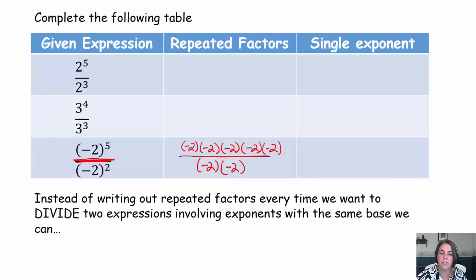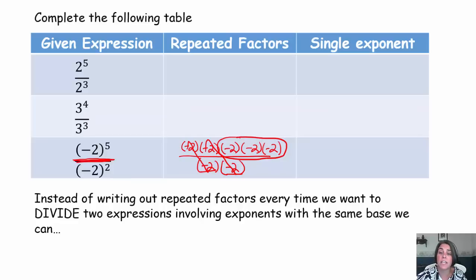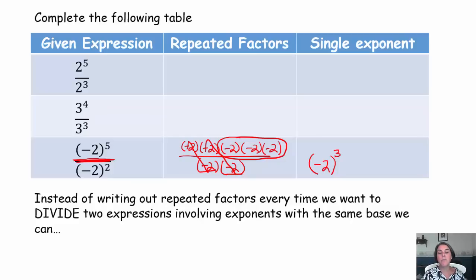Now I'm just going to divide out common factors. Negative two divided by negative two — a negative divided by a negative is positive, two divided by two is one. I do that twice. Then I take a look and say to myself: how many factors of negative two are left? There are three factors left. So my base is negative two, and because there were three factors left, I write my exponent as three. So negative two to the fifth power divided by negative two to the second power becomes negative two to the third power.